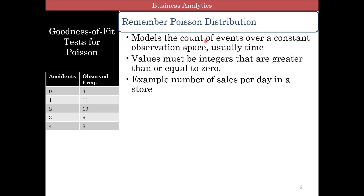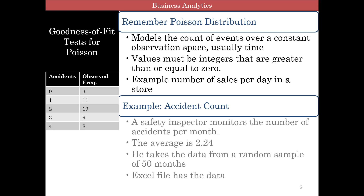What if we had a Poisson distribution? Poisson models the count of events over a constant observation space, usually time. Values must be integers greater than or equal to zero. An example is the number of sales per day in a store. Let's take an example of accident counts. A safety inspector monitors the number of accidents per month and knows on average there are about 2.24 accidents. This is the average — if you had 2 accidents over 3 months, that's about 0.66 accidents per month. He takes data from a random sample of 50 months.